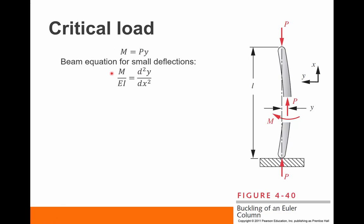Substituting this equation for M into the beam equation gives us a differential equation. Now we can use this equation and solve. So we have two constants, C1 and C2. Those come from our boundary conditions.